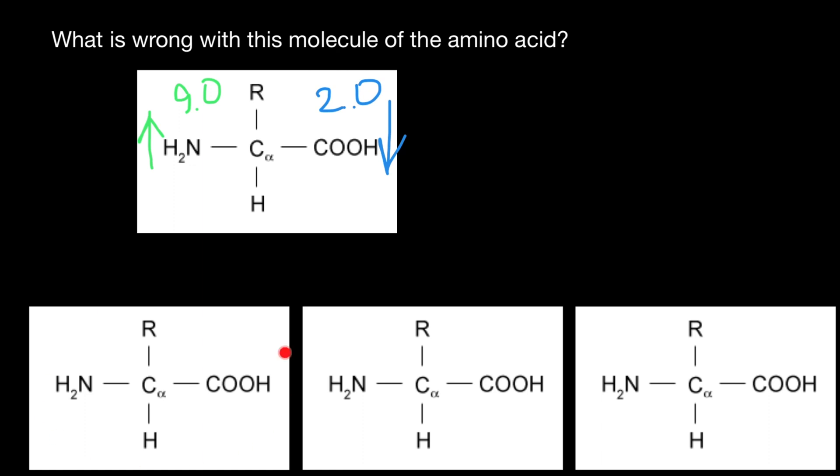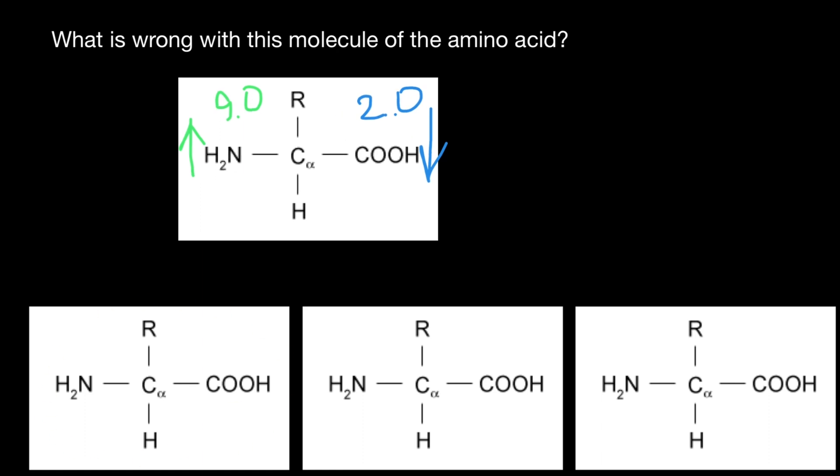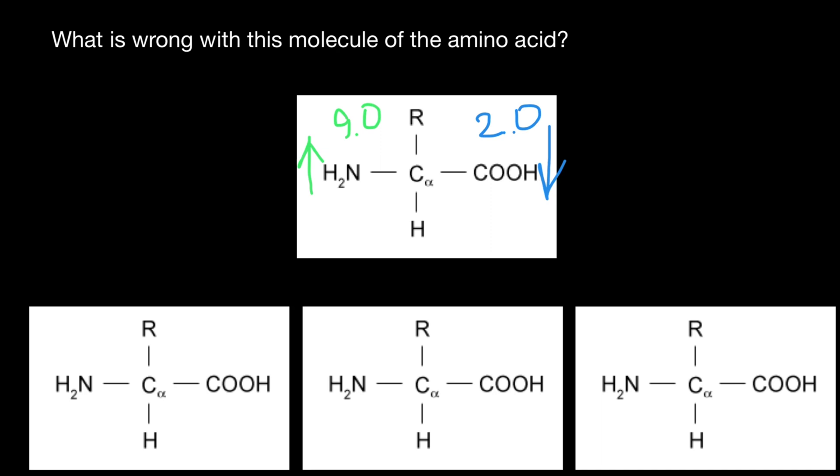But now let's take a look at what different variants we may get. For example, at low pH, what we are going to get is we are going to have this hydrogen here if our solution is going to be, say, pH 2.0 and below.